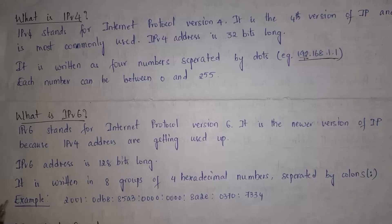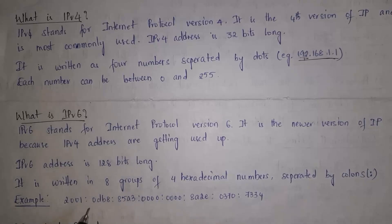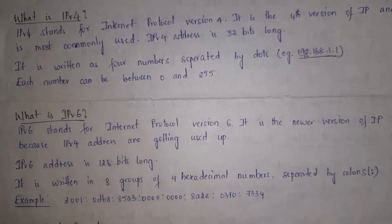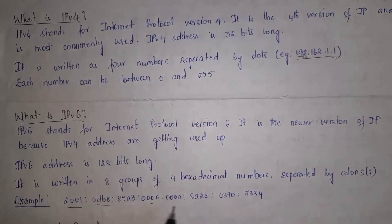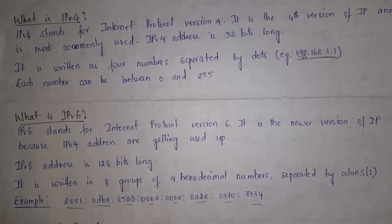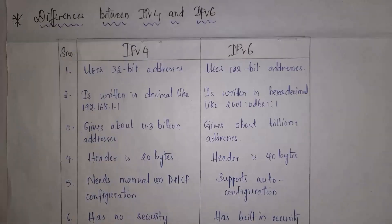IPv4 address is separated by dots, whereas IPv6 address is separated by colons. For example: 2001:0db8: and so on. IPv6 addresses contain not only numbers but also alphabets. In total, there are eight groups of characters separated by colons.